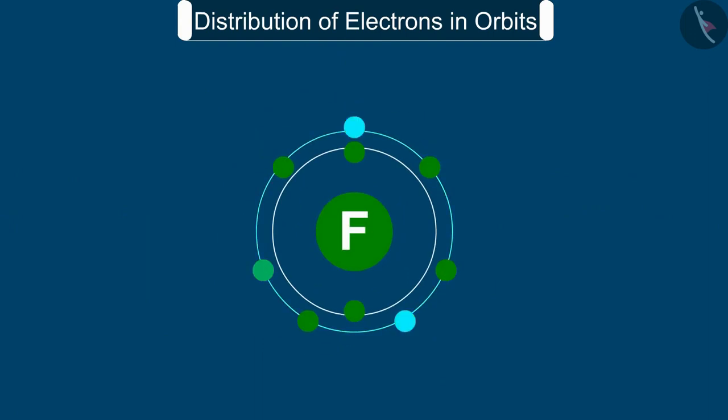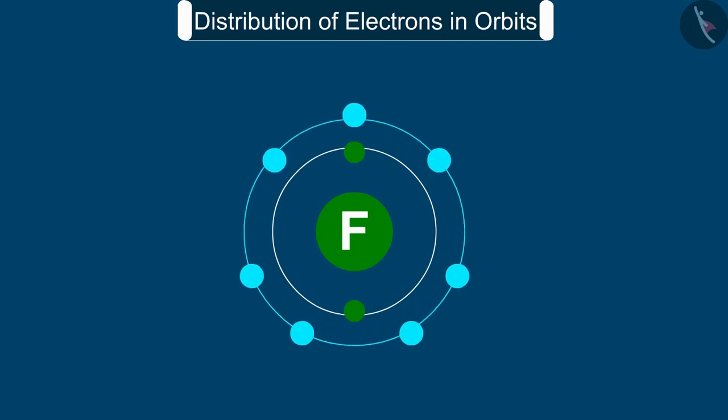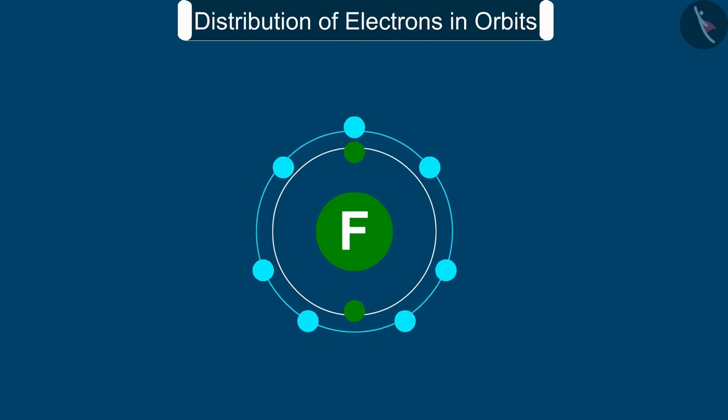For example, the fluorine atom has 7 electrons in the outermost shell and its valency could be 7. But it is easier for fluorine to gain 1 electron instead of losing 7 electrons. Hence, its valency is determined by subtracting 7 electrons from the octet. And this gives you a valency of 1 for fluorine.